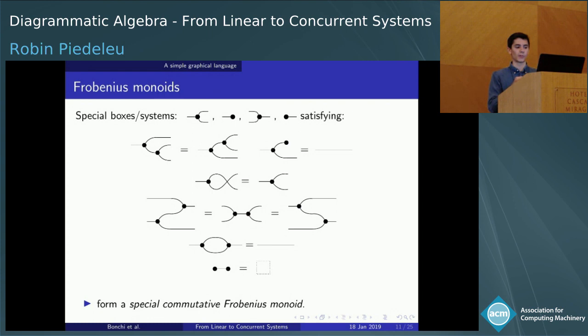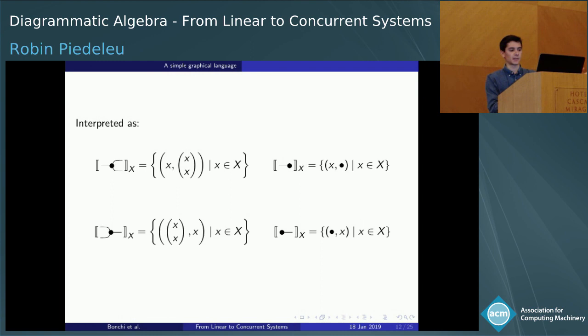There's a nice normal form theorem that tells us any two connected networks of these black dots are equal if and only if they have the same number of left and right ports. And we're lucky because any set carries such structures — we can interpret the ternary black node as copying, the unary one as deleting, and their mirrored versions as the converse relations.